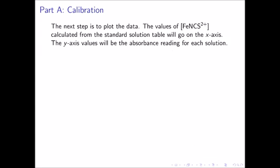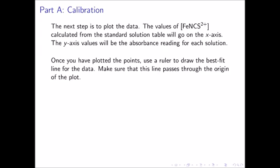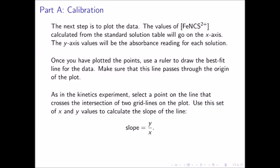Once you have calculated the concentration of the ferric thiocyanate complex for each of the six standards, the next step is to plot the data. The concentrations of the complex will be your x-axis values, and the y-axis values will be the absorbance readings for each solution. Once you have plotted all data points, use a ruler to draw the best fit line, making sure that this line passes through the origin. You will select a point on the line that crosses the intersection of two grid lines, read back to the y-axis and down to the x-axis, and use this set of x and y values to calculate the slope. The slope equals your selected y value divided by your selected x value, assuming the origin as your second point.